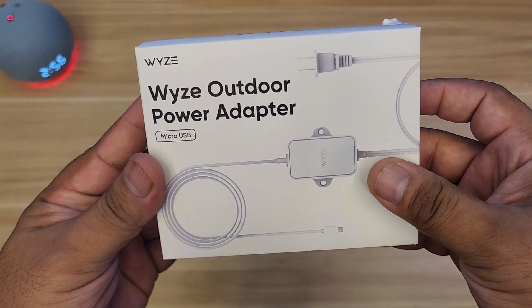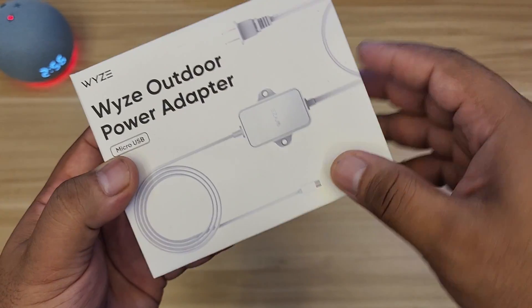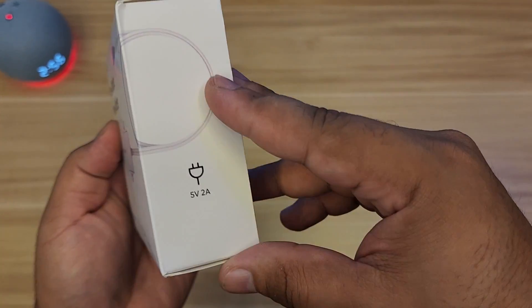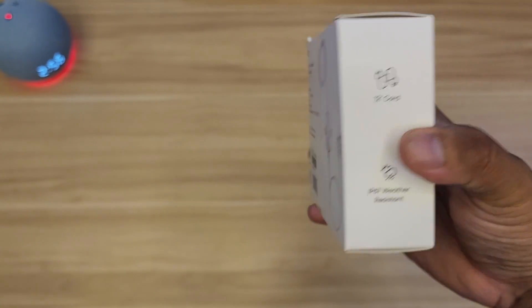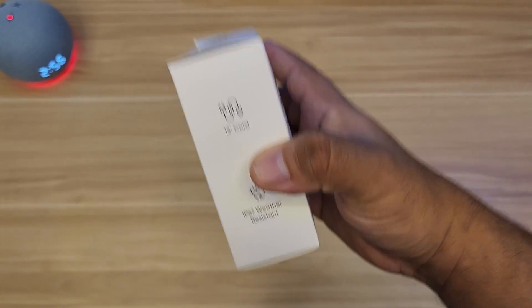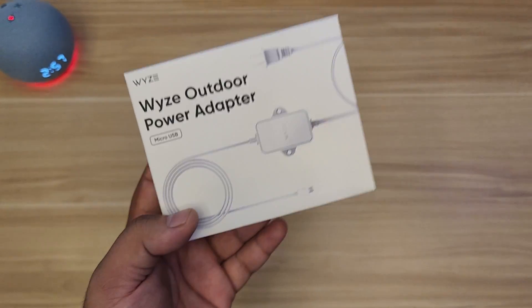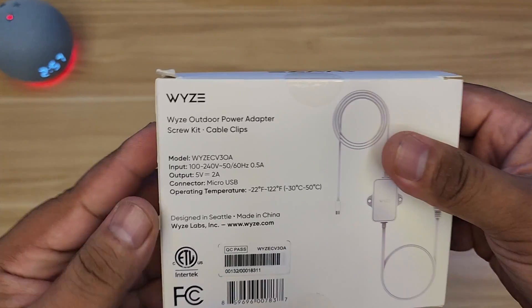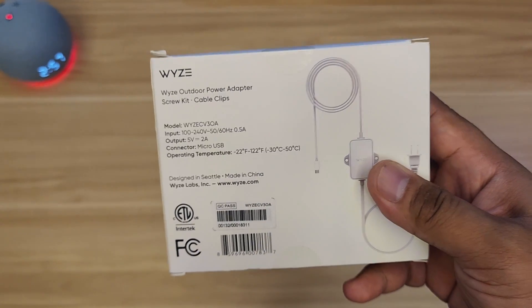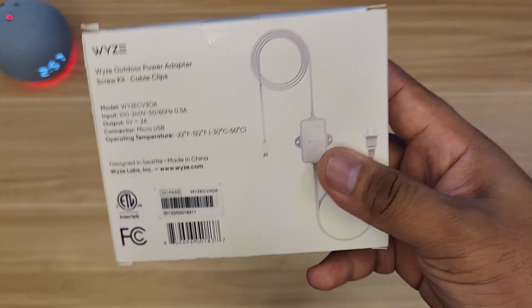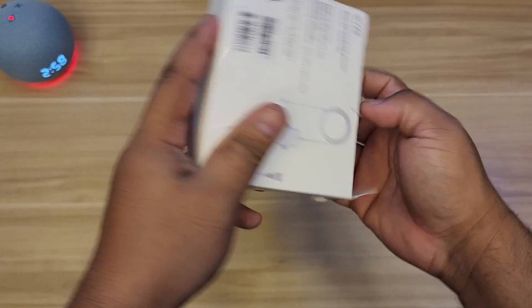Let me open up the Wyze Outdoor Power Adapter real quick. This is micro USB, a little bit heavy actually for a small package - 5 volt, 2 amperes. It's 12 feet cord, IP67 weather resistance, even higher than the actual Wyze. On the back it shows the model number, micro USB, temperature rating. It can be used for 100 to 240 volts so you don't need to worry about that. It included screw kit and cable clip.